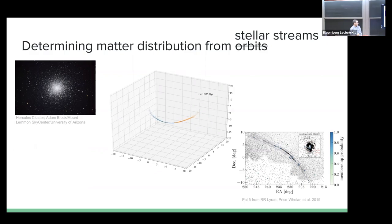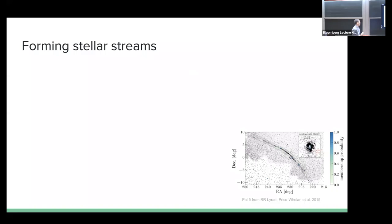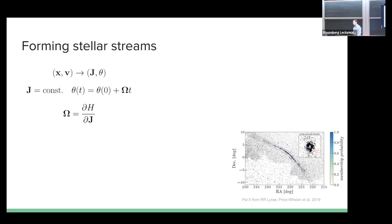One very easy way to understand why you get a thin filamentary structure is to convert from phase space (X and V) to what we call action-angle coordinates. A lot of dynamics becomes much easier when you convert to actions and angles, because your actions are constant and your angles evolve linearly over time. The frequency governing the evolution of the angles is just the derivative of the Hamiltonian with respect to the actions. So evolution in a potential becomes very easy to calculate.